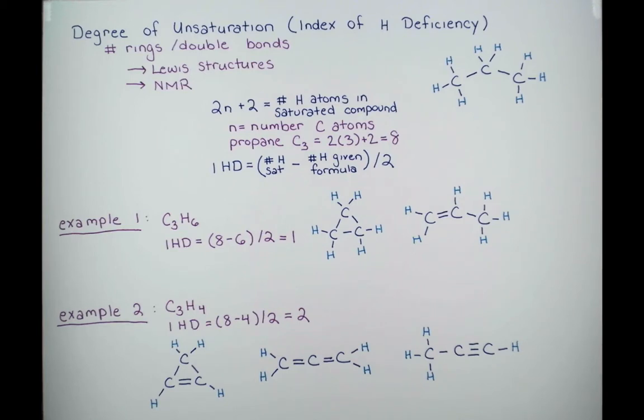In this lesson, we looked at how to calculate the number of hydrogen atoms on a saturated hydrocarbon using the number of carbon atoms in the structure. We then looked at how to compare the actual number of hydrogen atoms in a given structure to determine the IHD. The index of hydrogen deficiency tells us the number of double bonds or rings in a compound. An index of hydrogen deficiency of 2 can mean 1 ring and 1 double bond, 2 double bonds, or a triple bond.